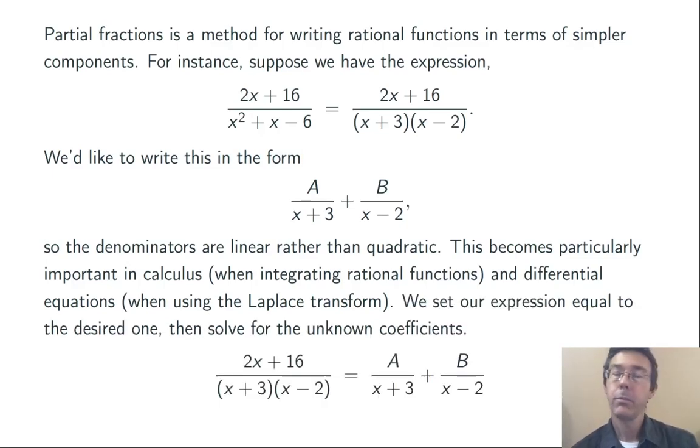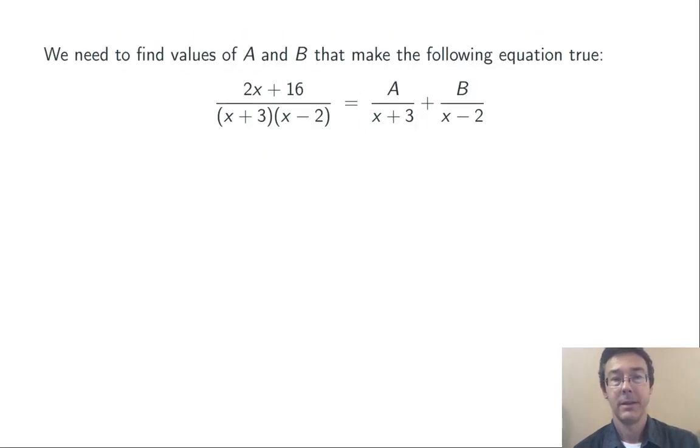So the procedure is kind of always the same. Once you know the form for your partial fractions decomposition, you're going to want to get a common denominator there on the right. Once you have the same denominator on the left and right, you're going to be able to equate the numerators and hopefully solve for A and B. So let's go ahead and do it in this example.